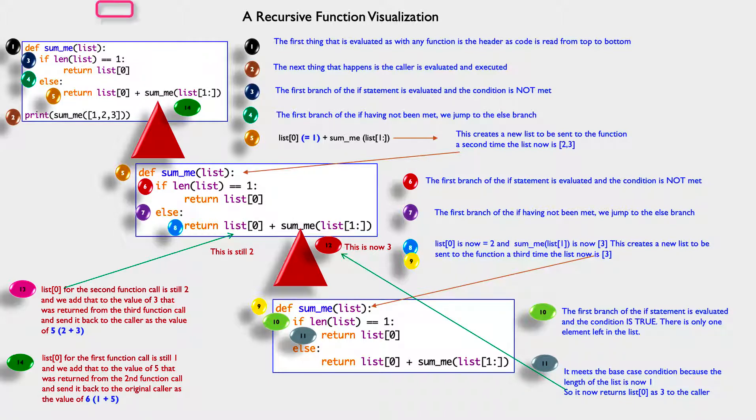Now list[0] from the first function call is still one. We add that one to the value of five that we returned back from the second time we went through the function and we get six.